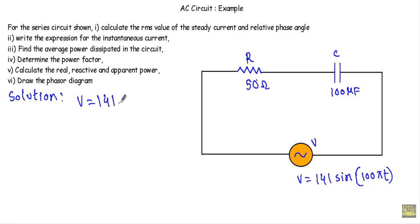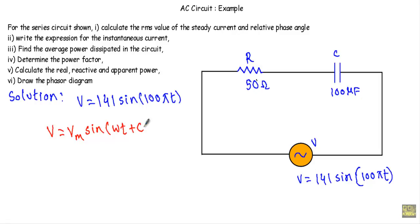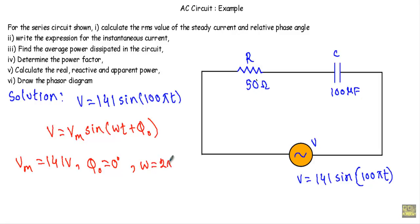In the circuit we are applying an alternating voltage V equal to 141 sine 105T. Comparing this with the standard equation V equal to Vm sine(ωt + φ₀), we get Vm equal to 141 volt, initial angle φ₀ equal to 0 degree, and ω equal to 2πF equal to 105, from which F equals 50 Hz.